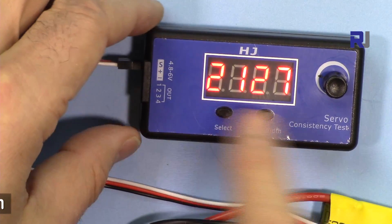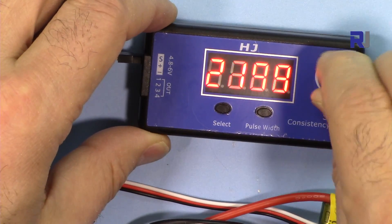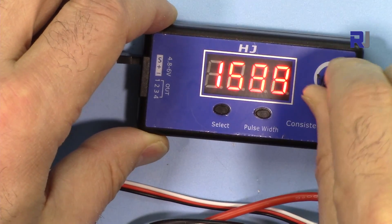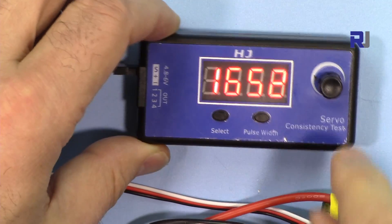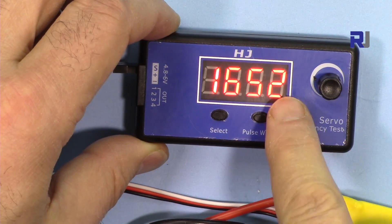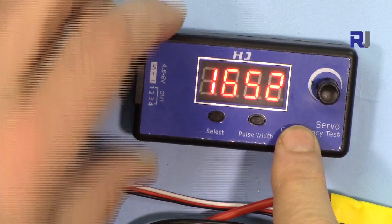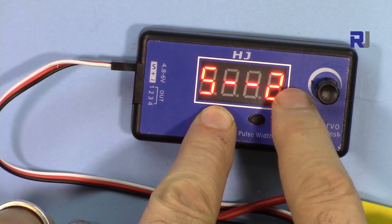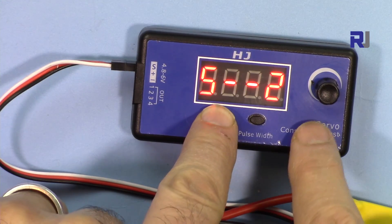Once you insert the power, this is how the screen looks. This is the value that you have here when you rotate the knob. This is between the two values.